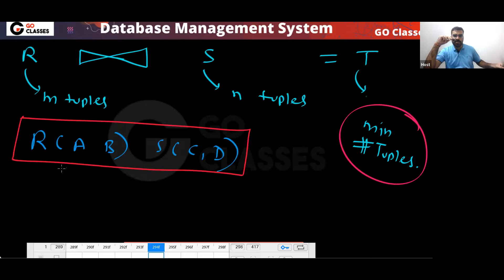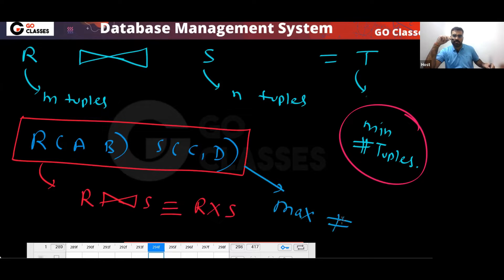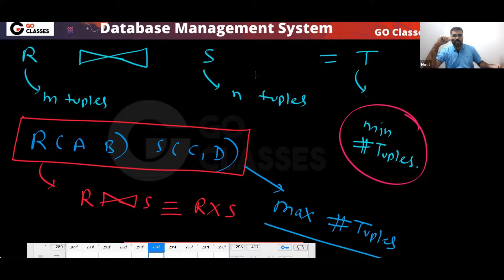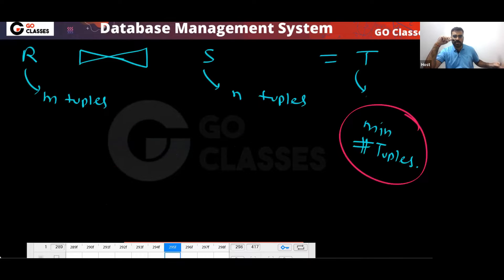This situation will actually give you the maximum number of tuples. So this logic — if nothing is matching — is that enough? No, that is not enough. This situation will actually give you a maximum number of tuples. What other situation will give you the maximum number of tuples? But before that, let's look at the minimum.